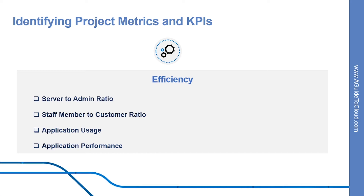Another category of KPIs is efficiency. The first is server-to-admin ratio — are projects reducing the number of administrators required for a given number of servers? The second is staff members-to-customers ratio — is it possible for fewer staff members to serve a given number of customers? The third is application usage — how busy is the application? And the fourth is application performance — is the application performance improving or dropping based on the application metrics?